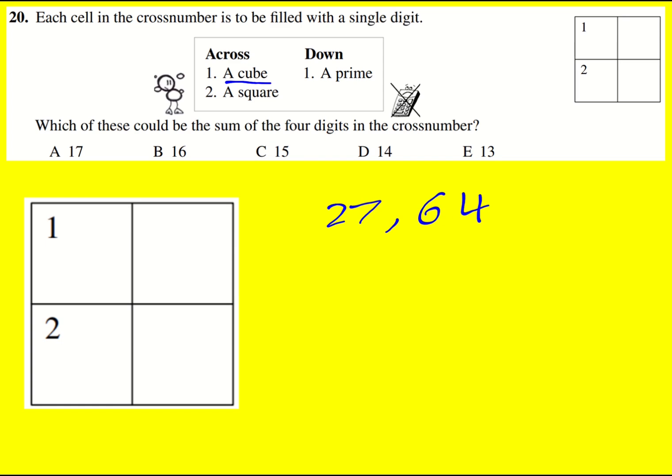There could be lots of options for two-digit squares, not so many for primes. So I'll start by trying to stick 27 in, and then I want a prime number down. Let me write down my prime numbers that start with 2.